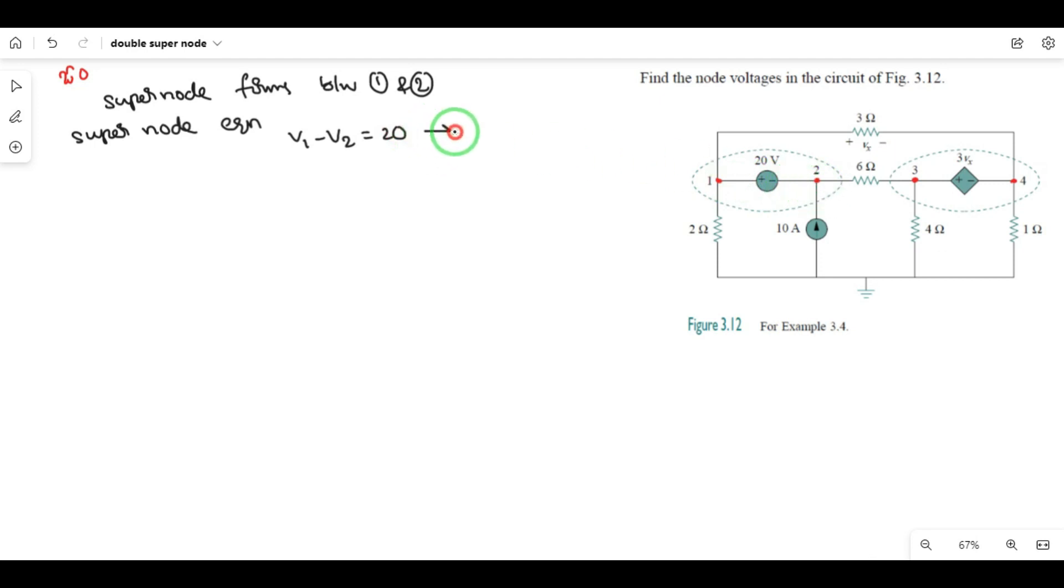This is equation 1. After the super node equation, we apply KCL. The 2 ohms resistor applies, so V1 voltage minus 0 divided by 2, plus the 3 ohms resistor, V1 minus V4 divided by 3. This is node 1 complete.